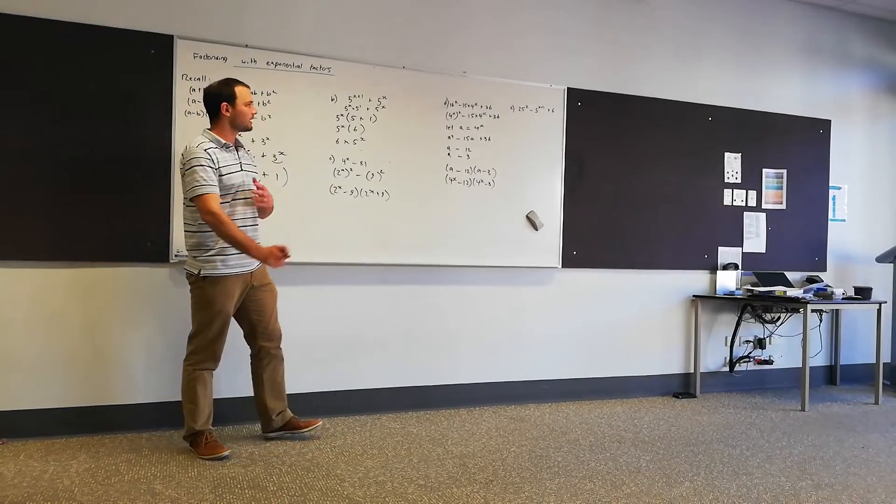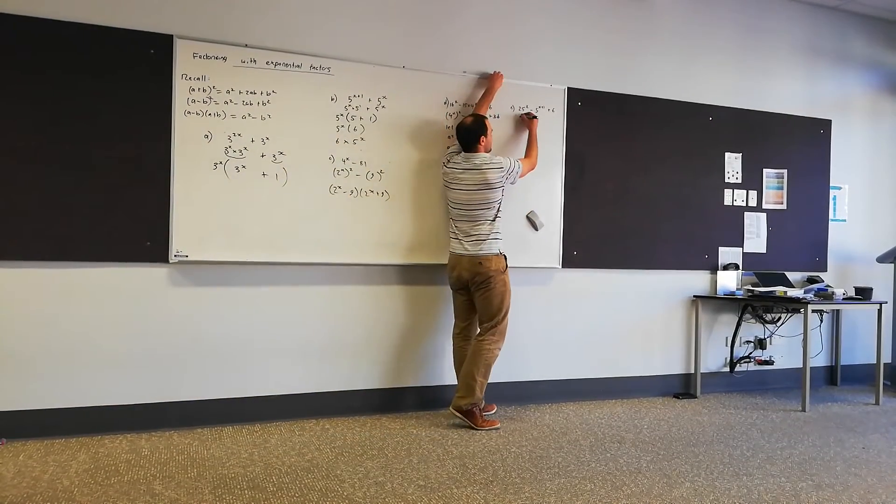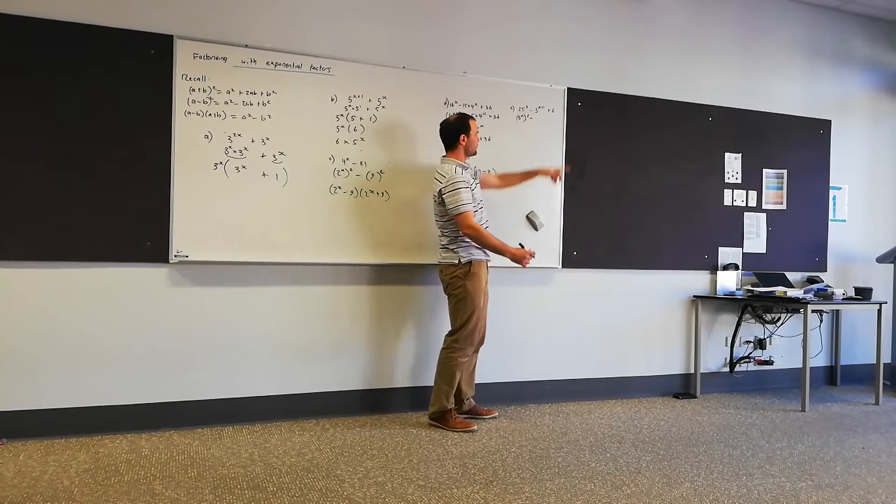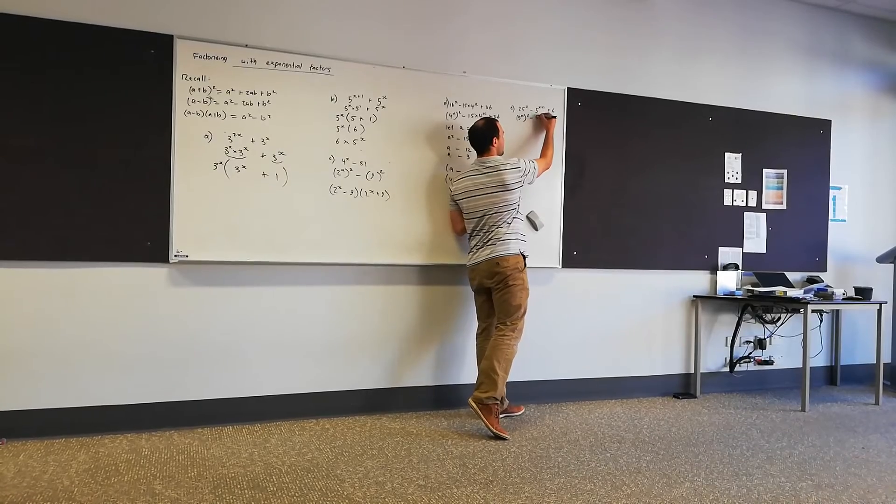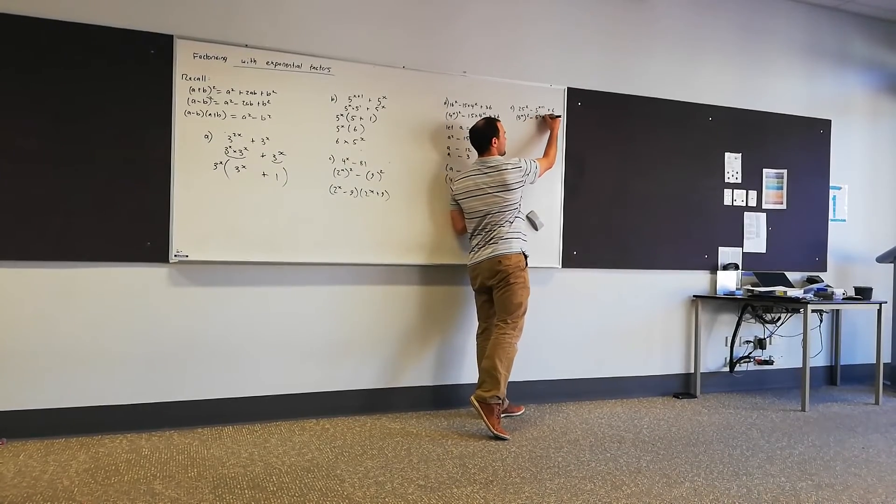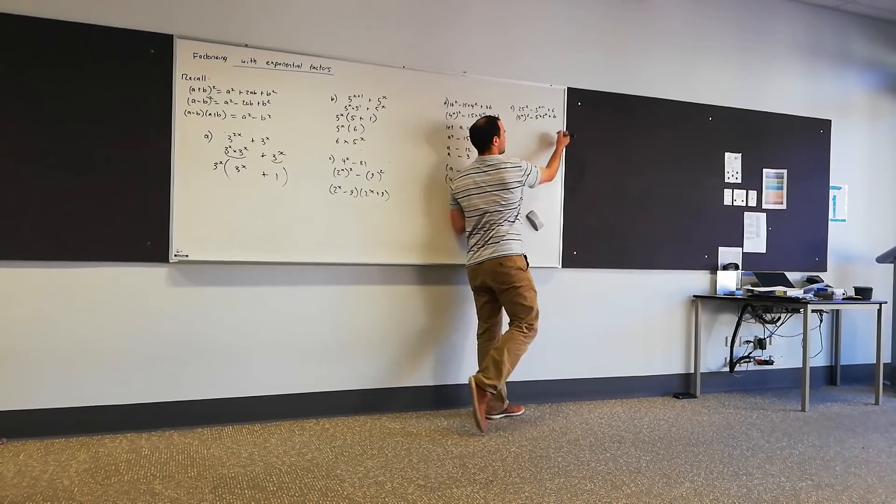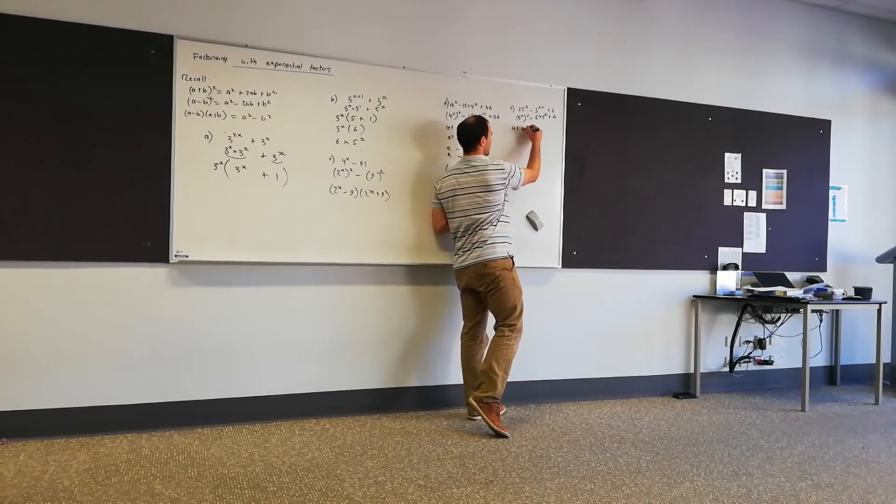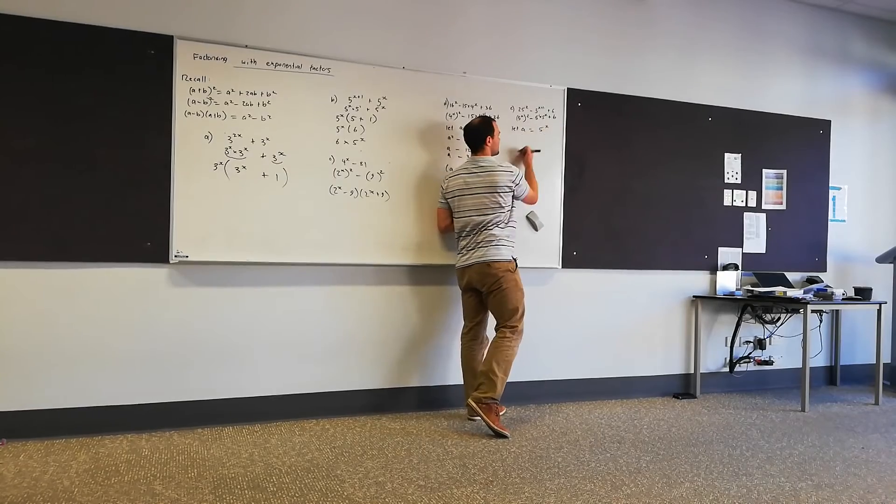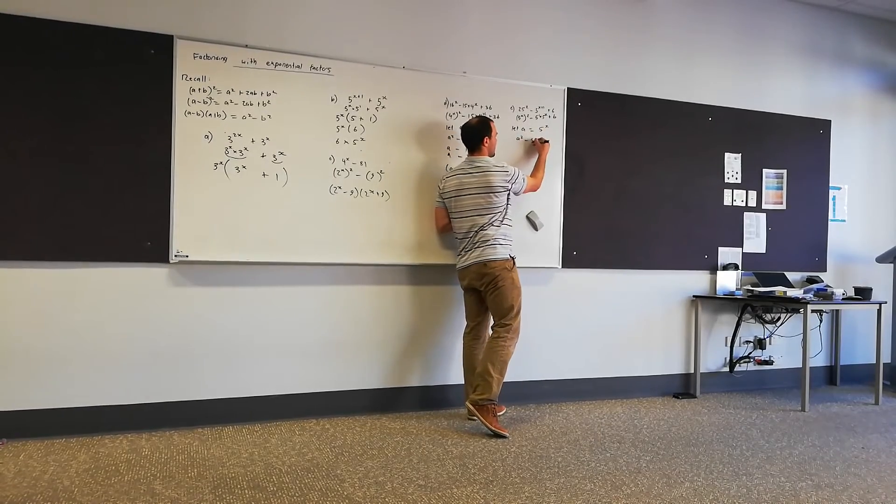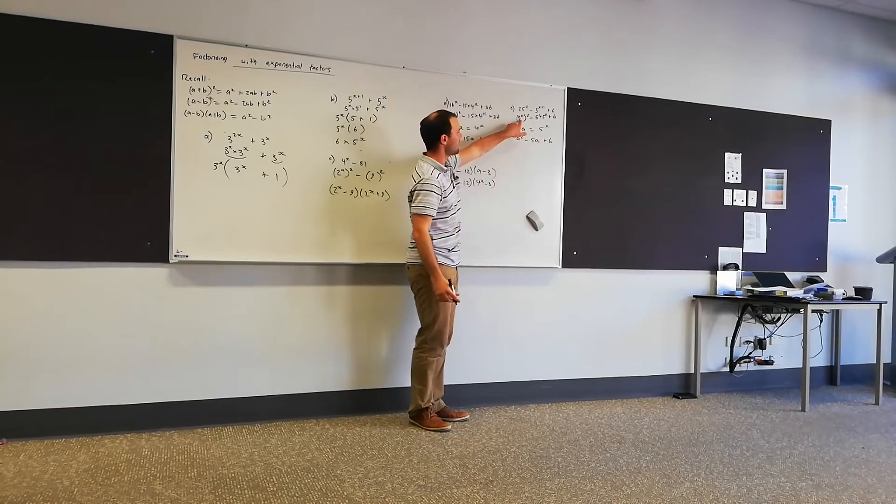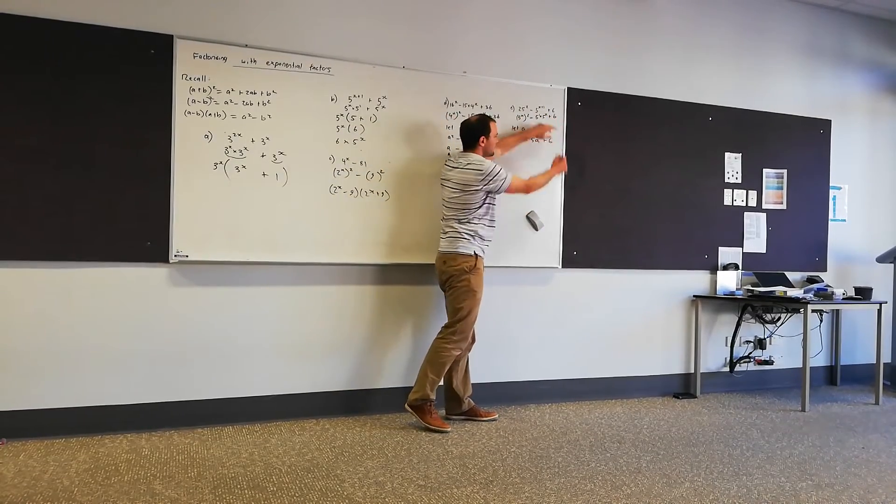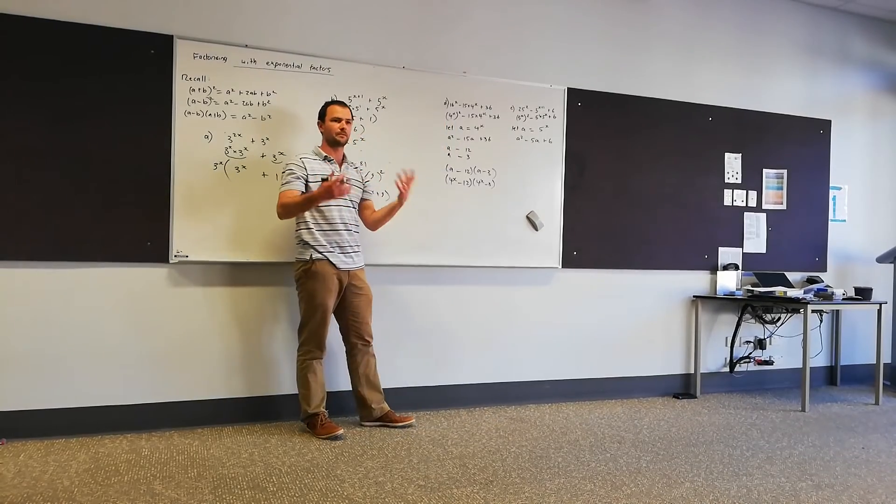Last one's pretty similar. What we've got here, we've got (5^x)^2 and here 5^(x+1) we can split into 5^1 times 5^x. Okay, then again, let's dictate a. Let's say let a equal 5^x. So this time we're going to have a^2 take 5a plus 6. Alright, a is 5^x, so a^2 take 5 lots of a plus 6. And then again we're trying to factorize this one.